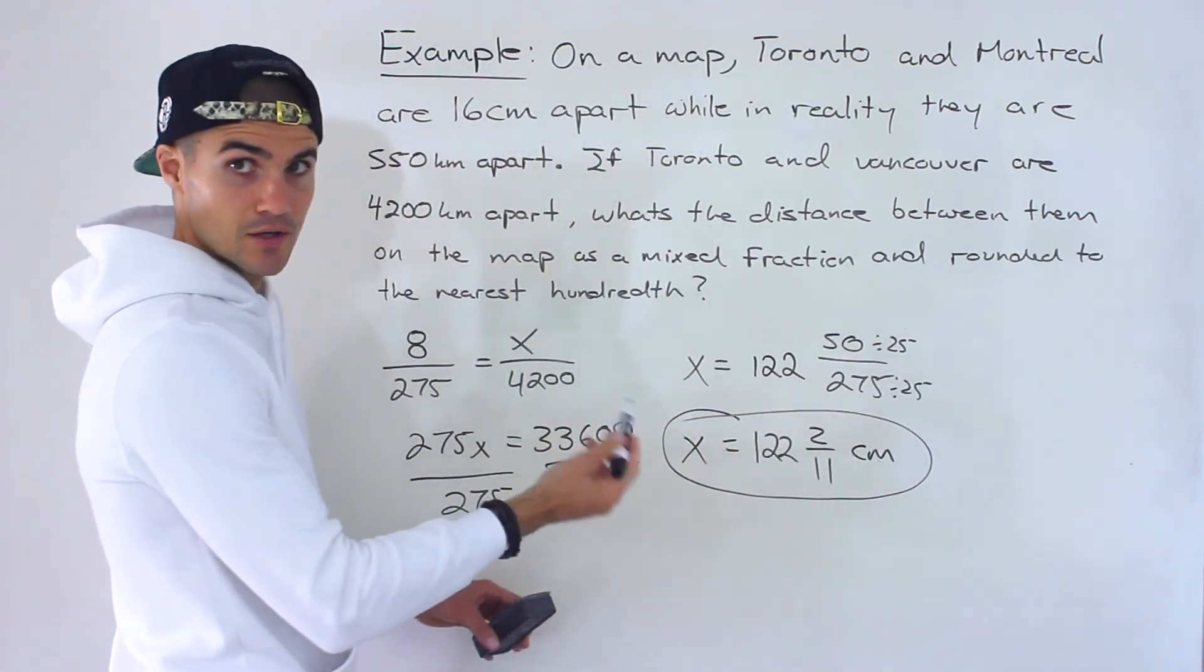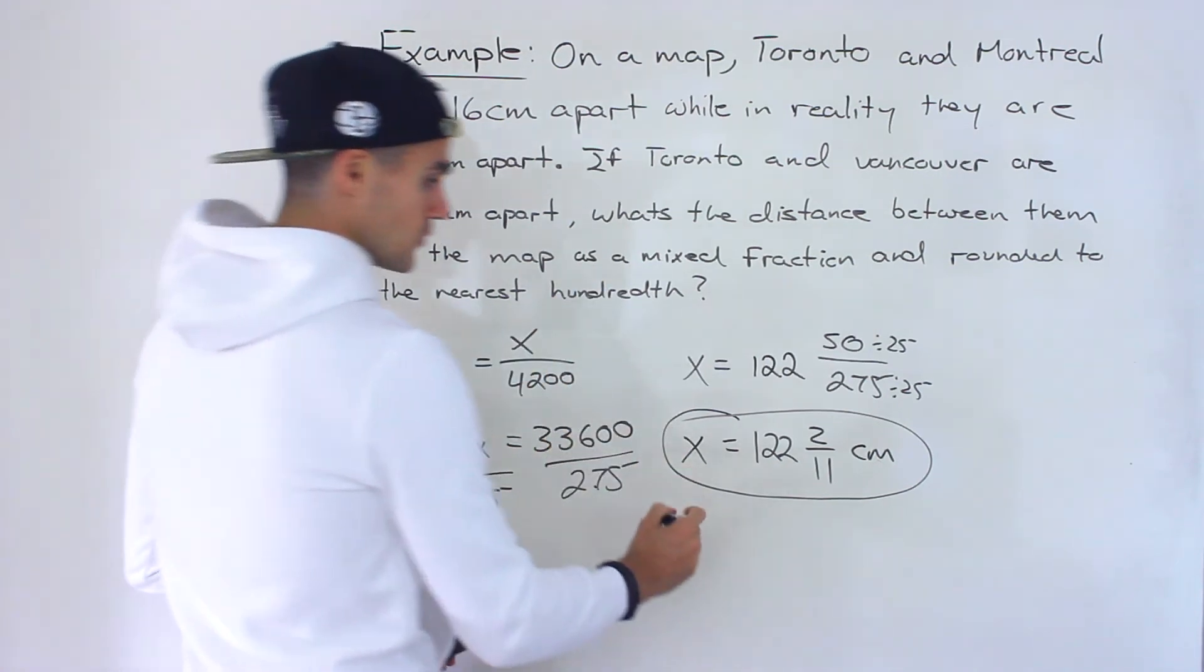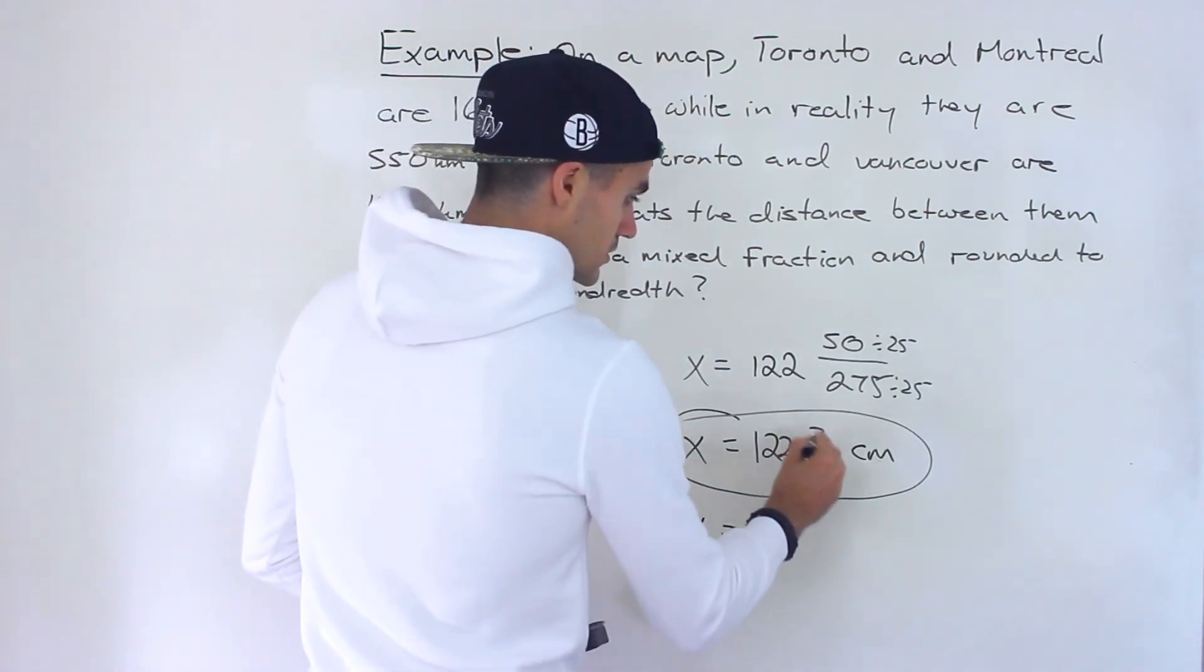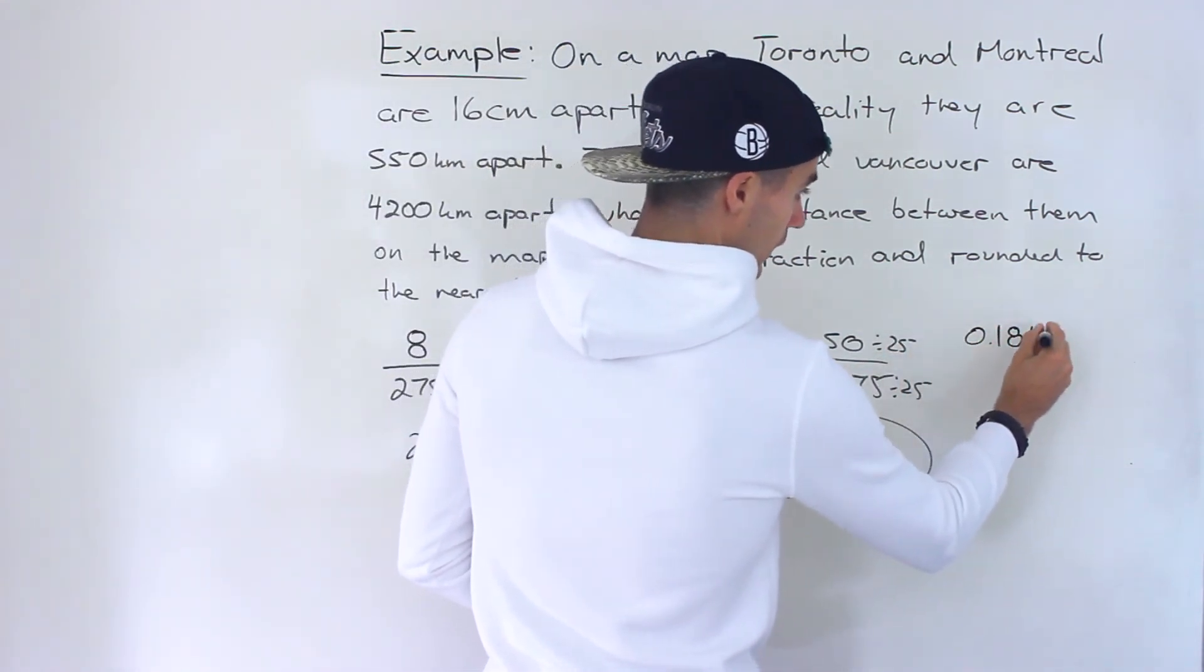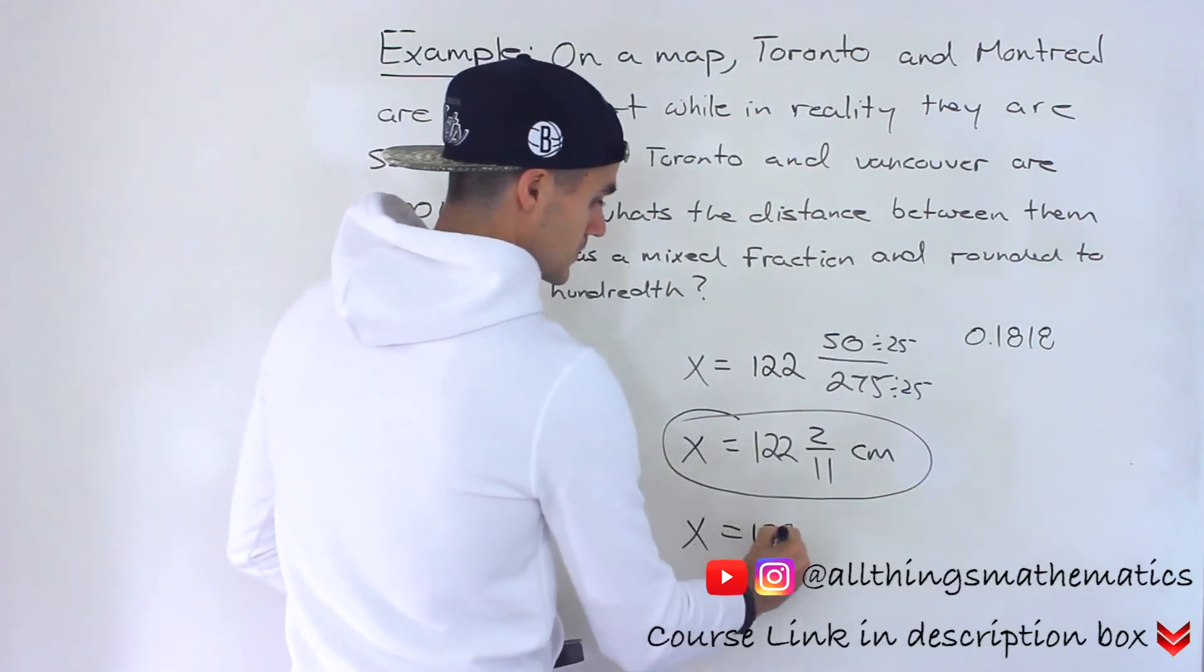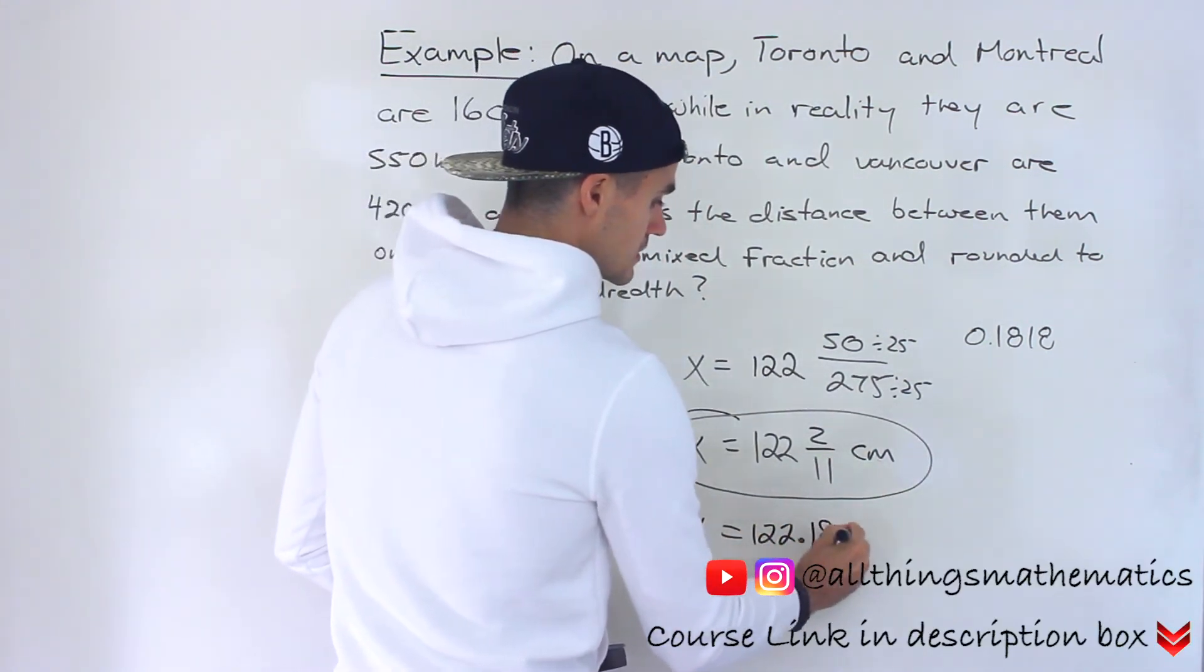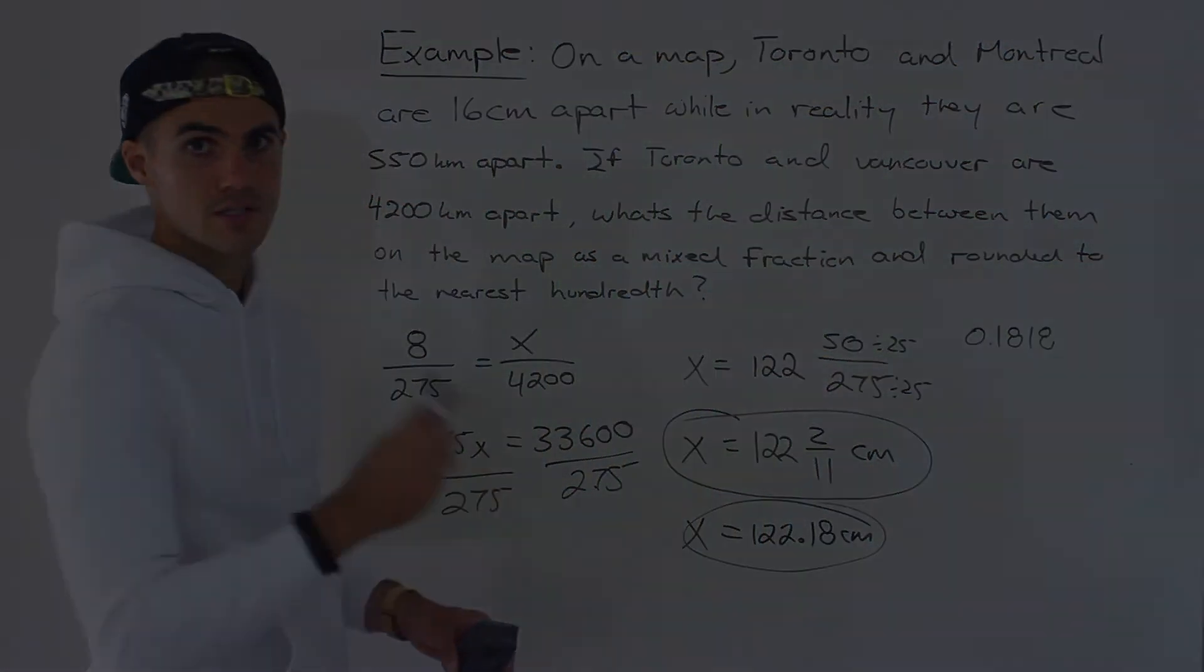That's how many centimeters apart Toronto and Vancouver are on the map and if you want to get it as a decimal, 2 divided by 11 would be 0.1818 repeating. So it would be 122.18 centimeters if we round to the nearest hundredth.